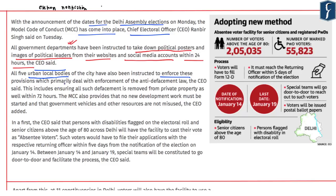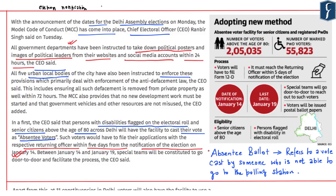Urban local bodies of Delhi have been instructed to enforce provisions of the Election Commission of India with respect to enforcement of the Model Code of Conduct. Another important aspect highlighted is absentee voters: persons with disabilities flagged on the electoral roll and senior citizens above the age of 80 years across Delhi will have the facility to cast their vote as absentee voters. Such persons need to file their applications with the respective Returning Officer within five days from the notification of elections on 14th January 2020.